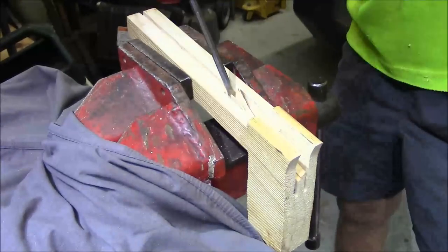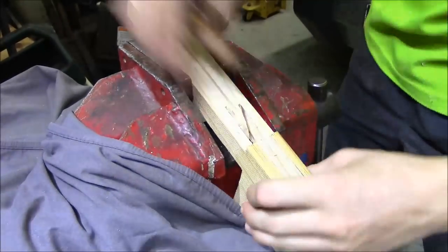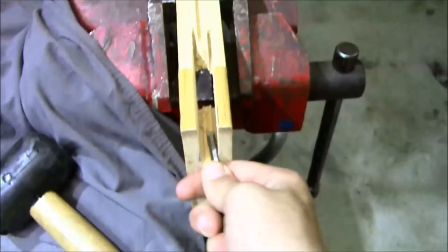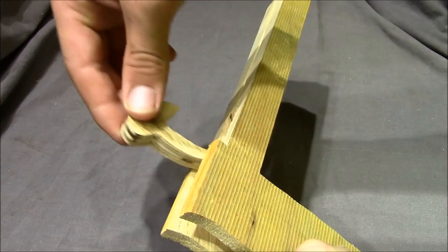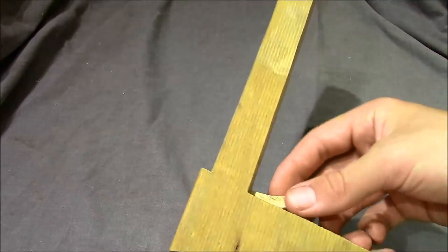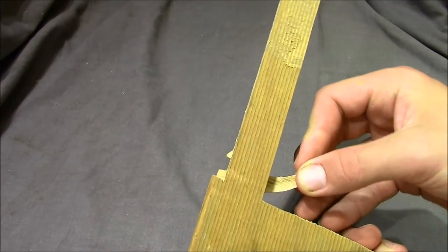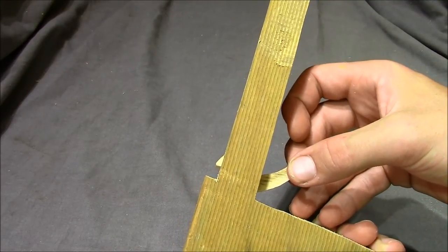You're now just going to need to take a chisel and simply chisel out all that section that we cut and that's where your trigger is going to slide in. As you can see my trigger fits in there nicely and it can easily pivot without any issues.